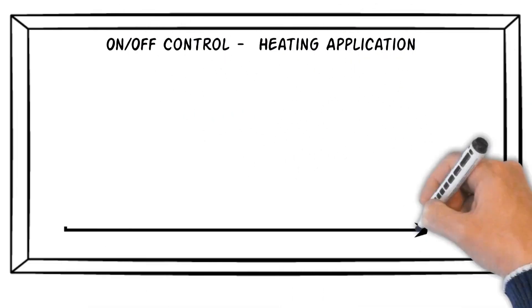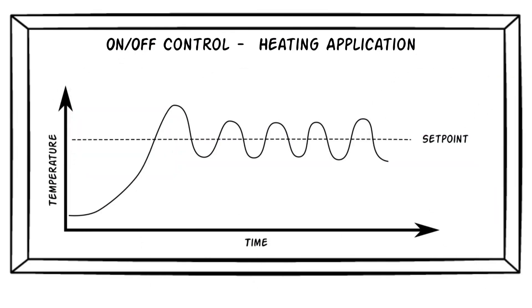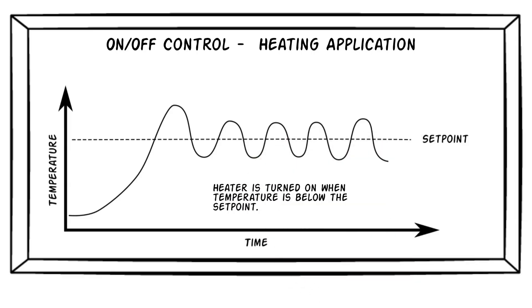The graph we've drawn here shows the typical relationship between time and temperature for an on-off temperature control application. Below the set point, the heater is turned on, which causes the process temperature to increase. Once the temperature reaches the set point, the controller turns the heater off.